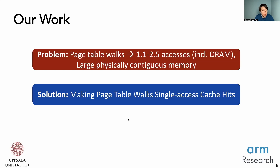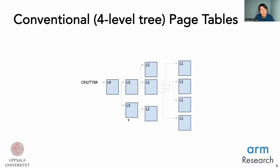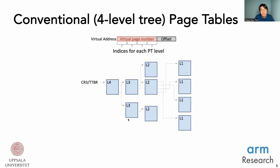Our solution is making page table walks single-access cache hits. To achieve single access, we are going to flatten the page table. To achieve cache hits, we are going to prioritize keeping the page table in the cache. Let's first look at flattening. Conventional page tables take a virtual address and convert it to a physical address, splitting the virtual page number into different parts used as indices into the different levels of the page table.